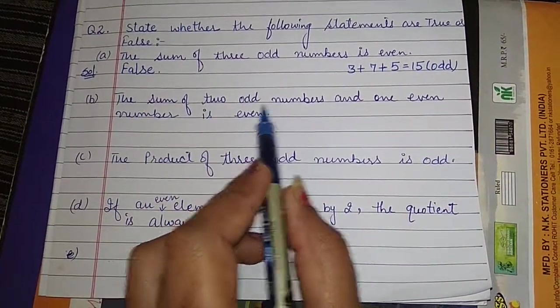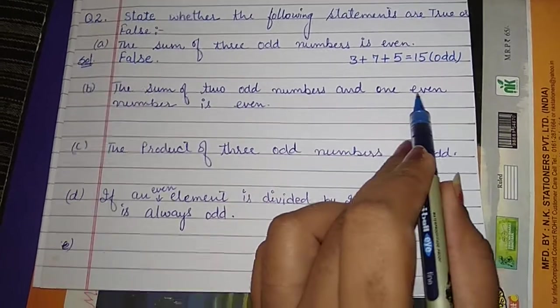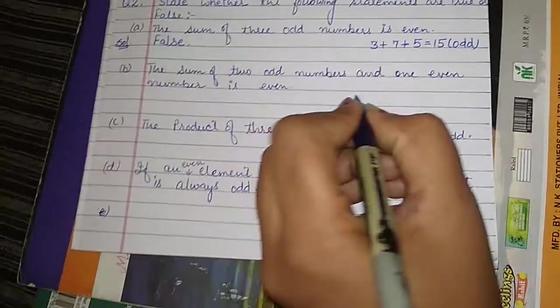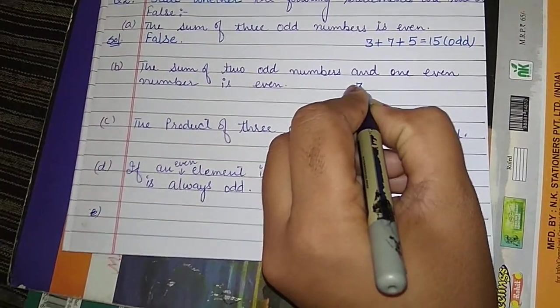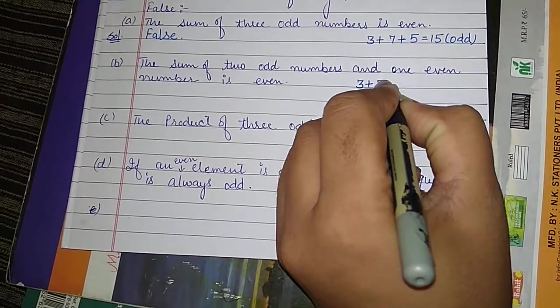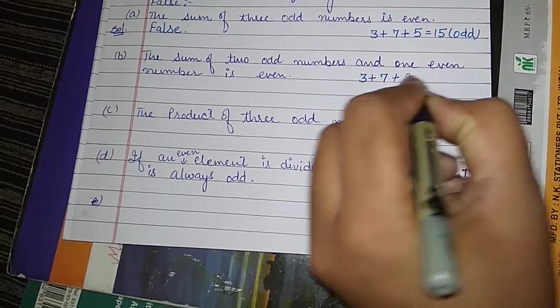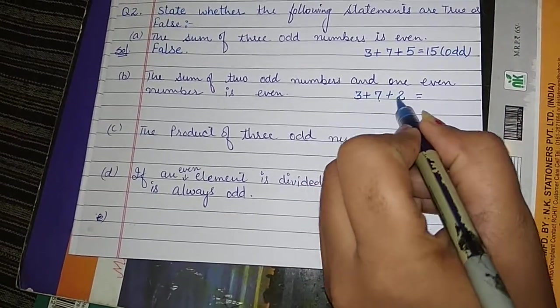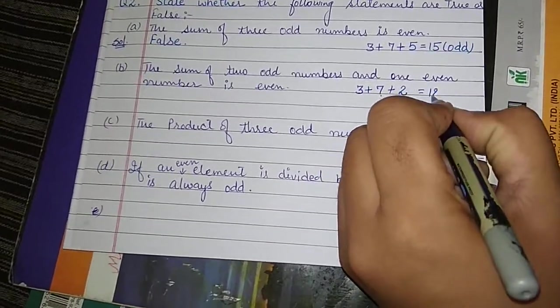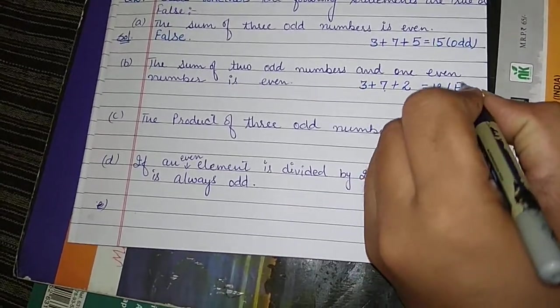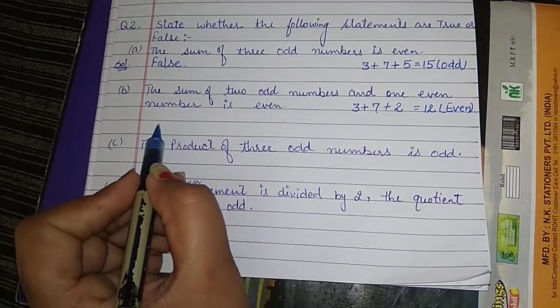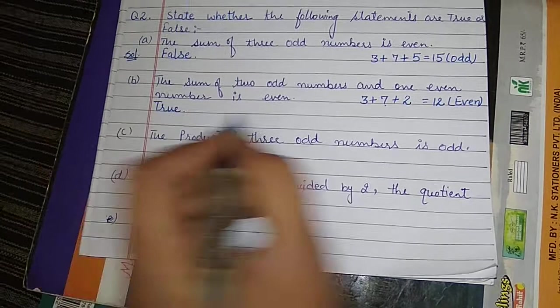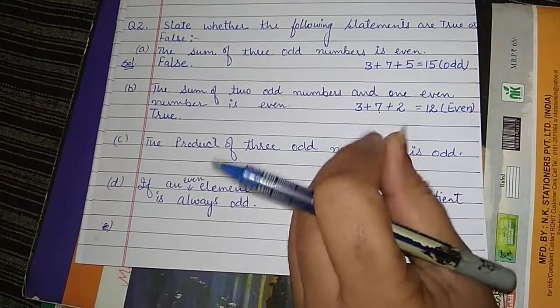In the next statement, the sum of two odd numbers and one even number is even. Sum of two odd numbers, you can take three plus seven, and one even number that is two. Here three plus seven is ten, ten plus two, that is 12, that is an even number. It means this statement is true. You can take any odd numbers.